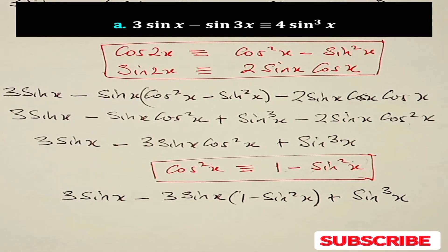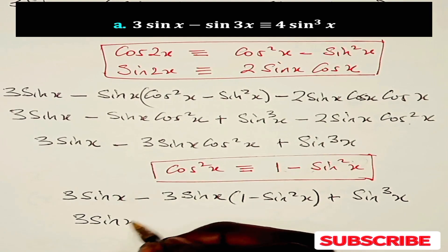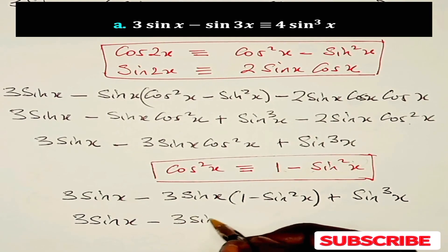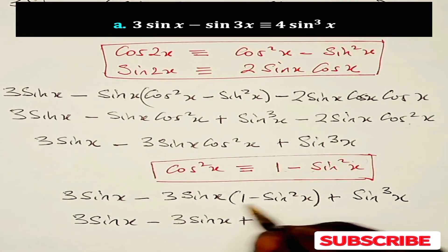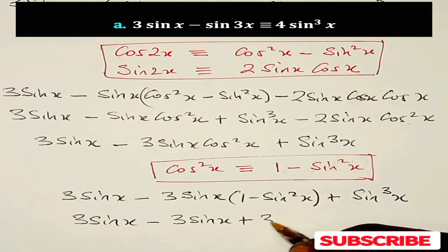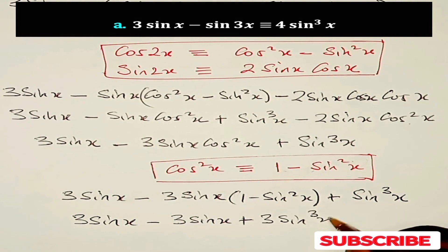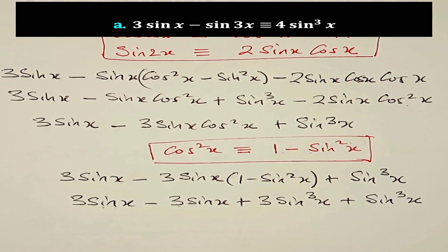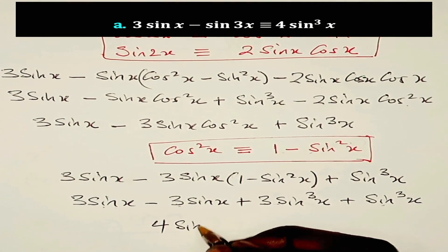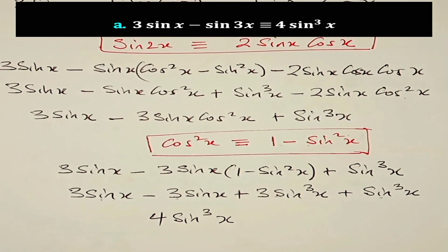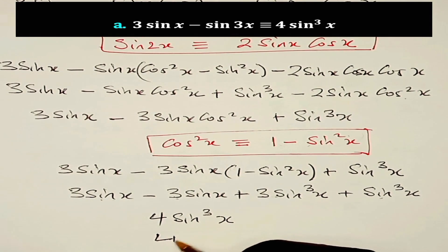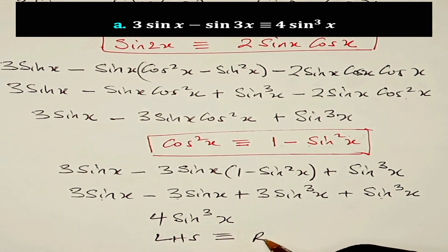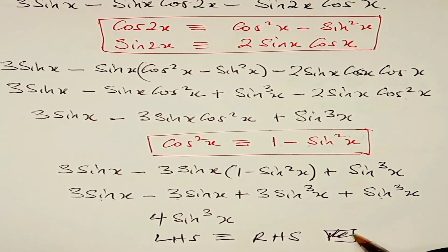Now let's remove the brackets. We have 3 sine x minus 3 sine x plus — a negative and a negative gives a positive — so we have 3 sin³x plus sin³x. The 3 sine x minus 3 sine x gives zero. Adding the like terms gives 4 sin³x. Therefore the left hand side is identical to the right hand side. We are done with the first part of this example.